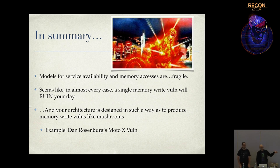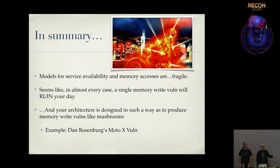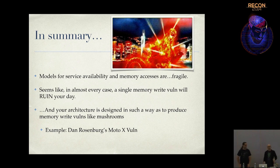An example is Dan Rosenberg's Motorola X vulnerability from around 2011. We've got a similar HTC bug coming up. All that took was a write-zero - he had the ability to write zero, and used it to unset a global variable that influenced whether you could unlock your phone. He unset the variable, called unlock, and it said 'Is this variable set? No. Cool.' And it unlocked. There were a lot of other things you could do with that same bug.